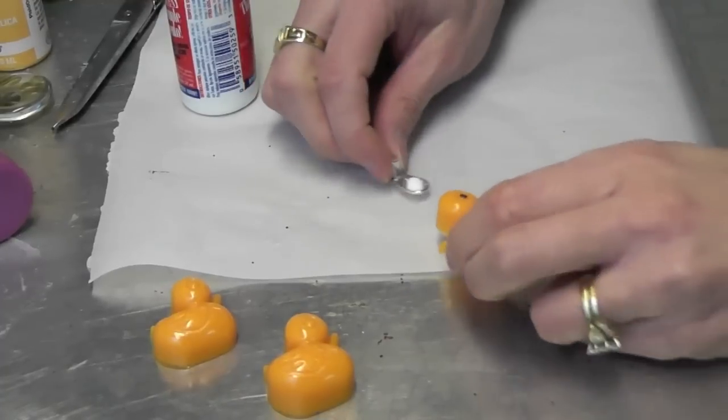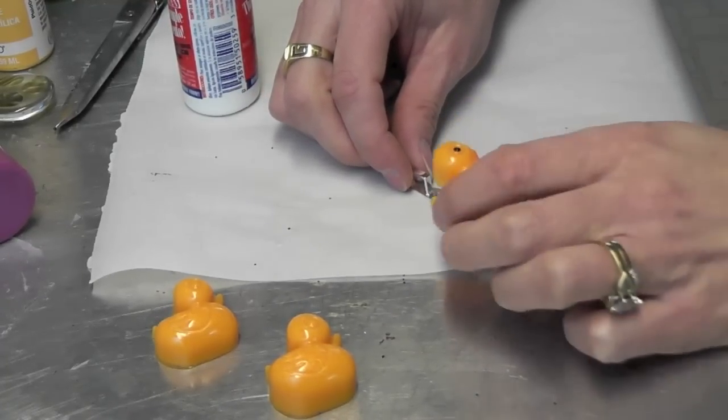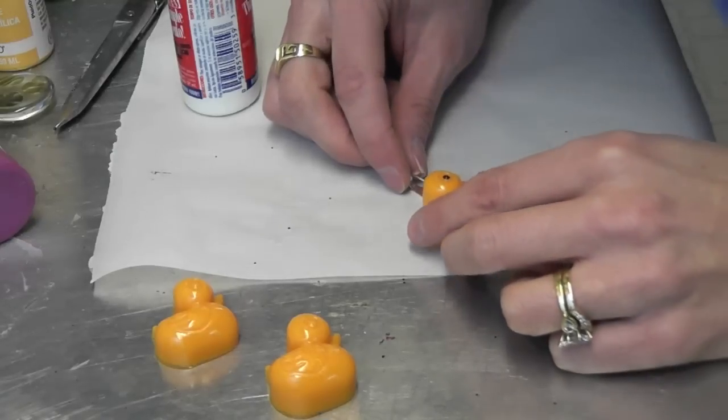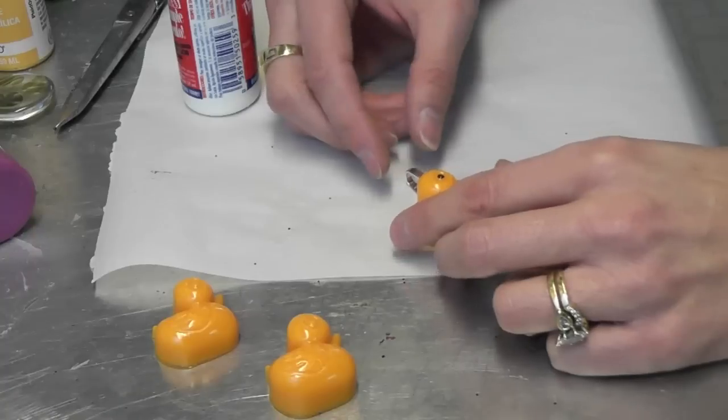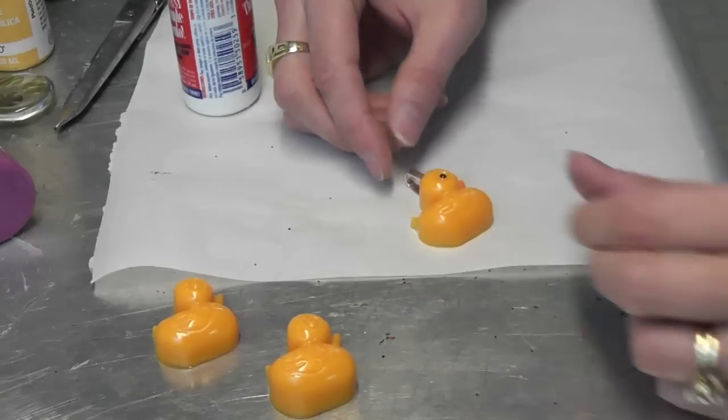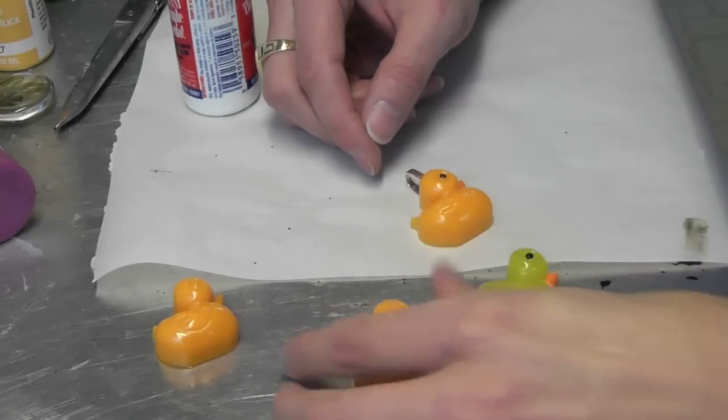So just use any glue that would work - I put the Weld Bond on there, plop them right on there, let them sit, and then you're all done. Now you have this cute little rubber ducky pendant. I have a couple extras here so I'll probably do those as well.